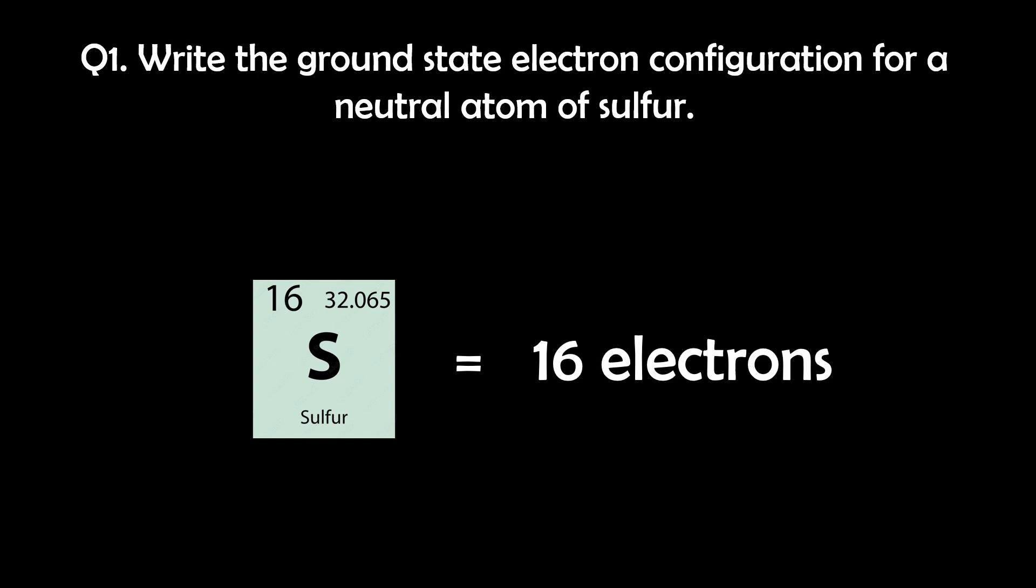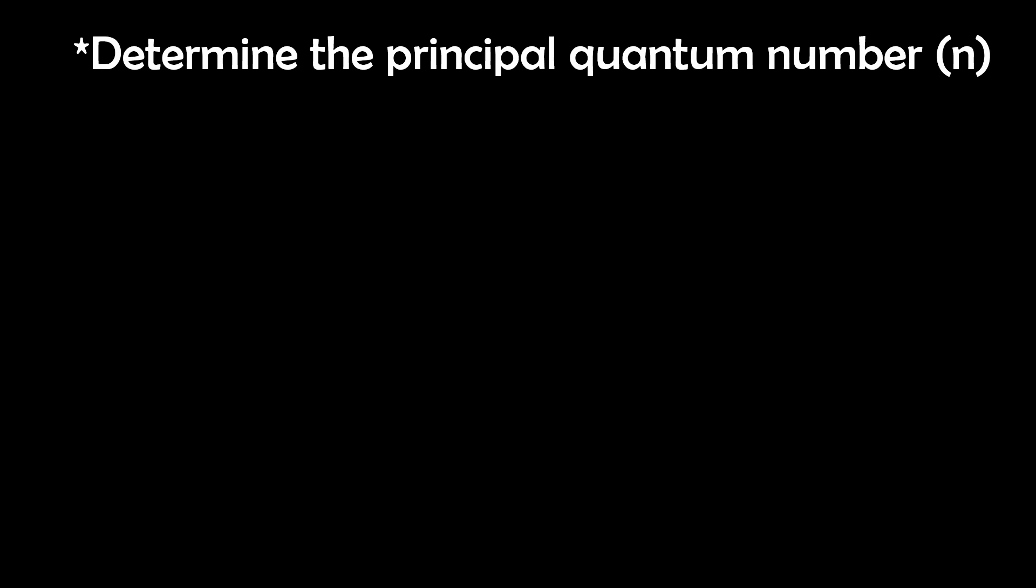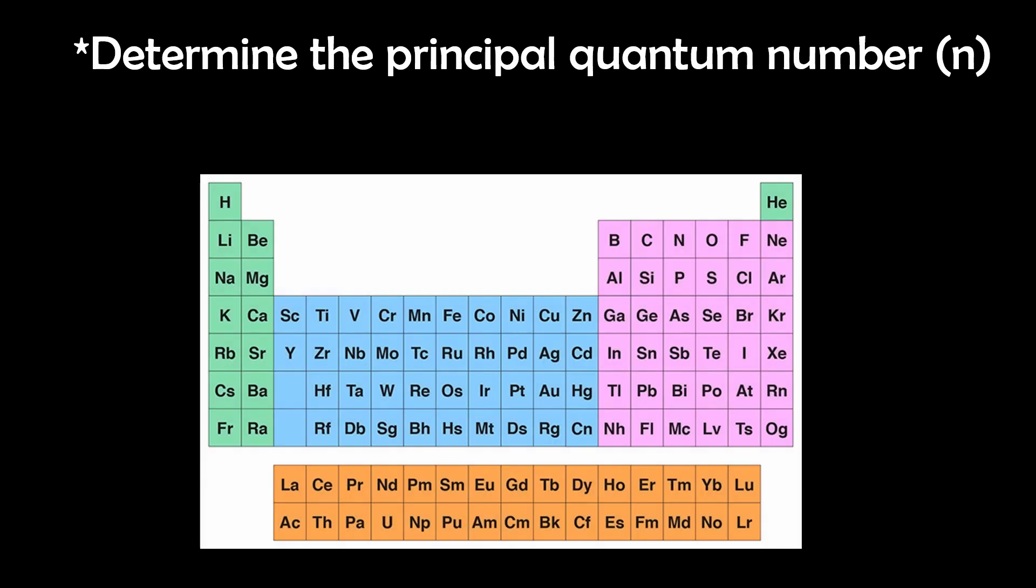Next, we determine the principal quantum number N for its valence subshell. If we look at the periodic table, we see it has a principal quantum number of 3.